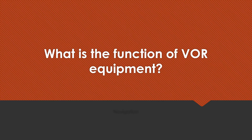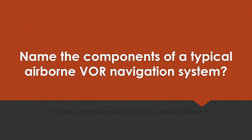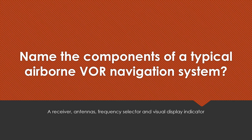What is the function of VOR equipment? For navigation. Name the components of a typical airborne VOR navigation system. A receiver, antennas, a frequency selector, and a visual display indicator.